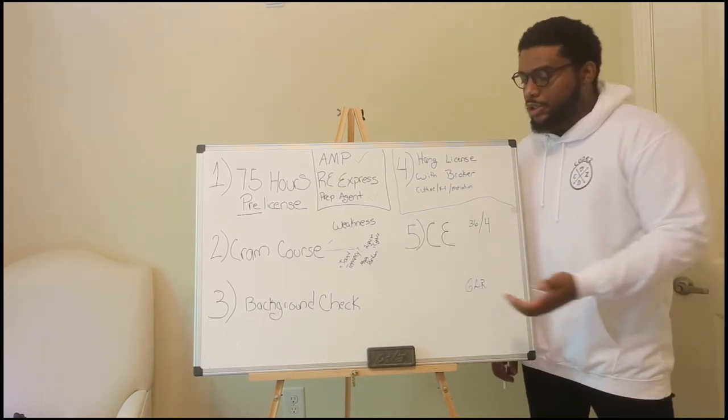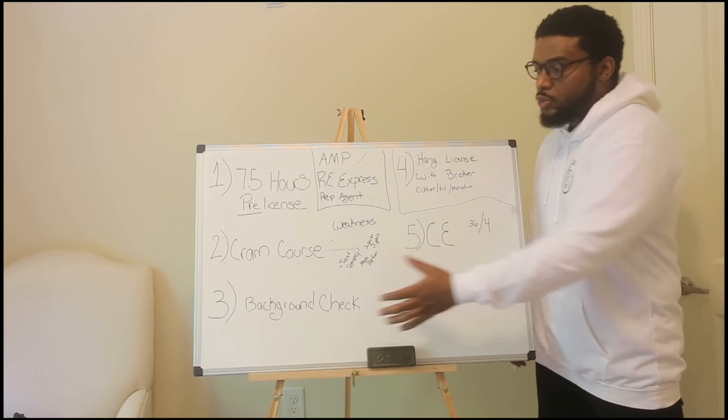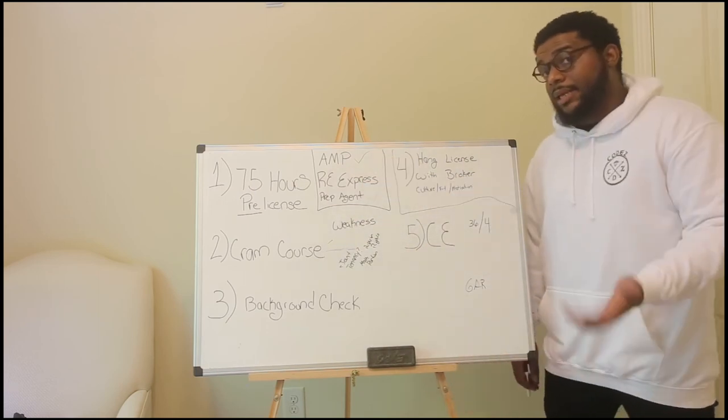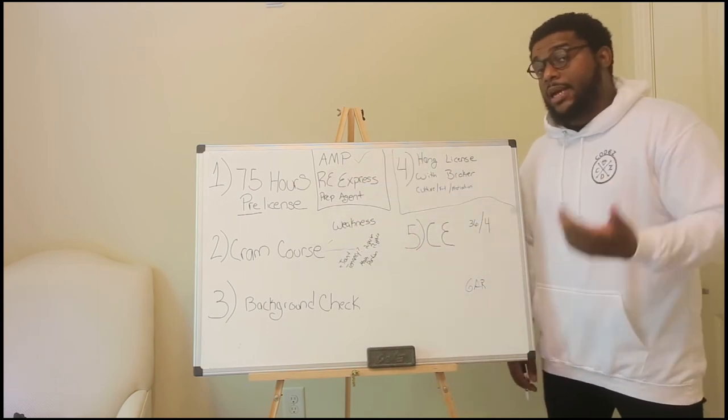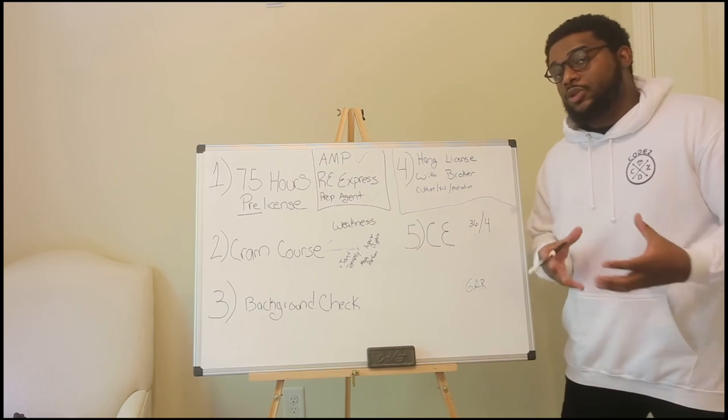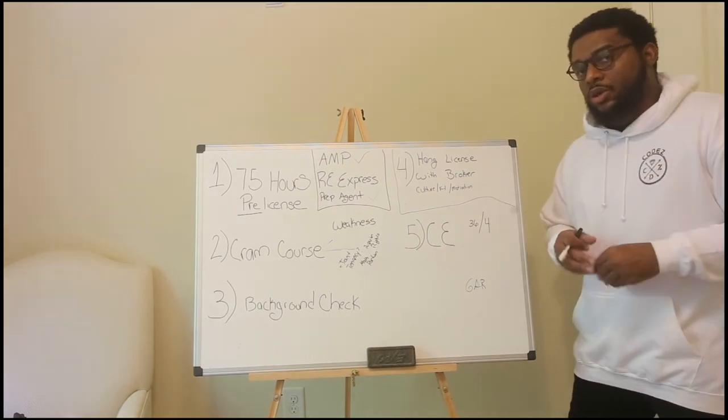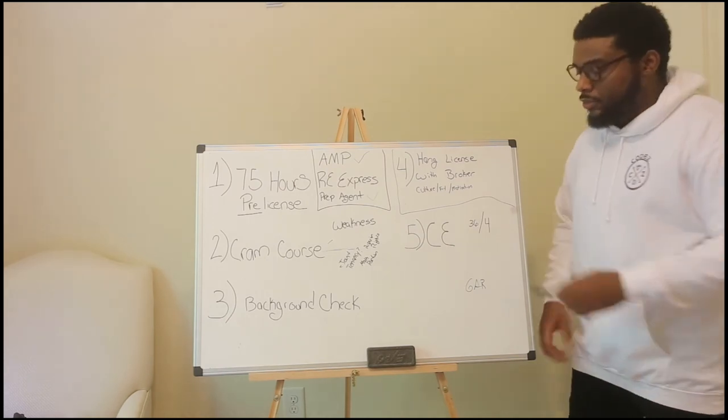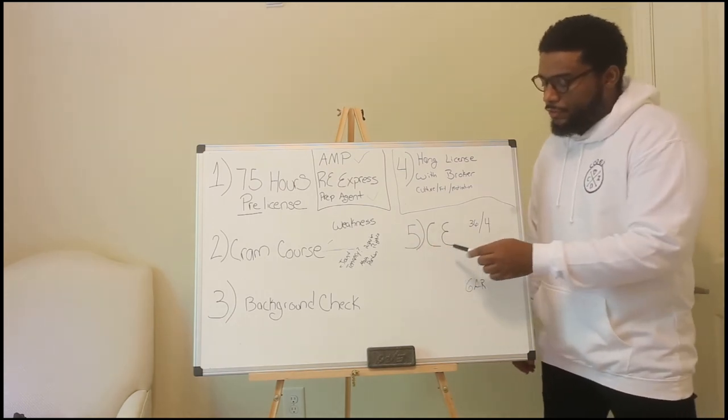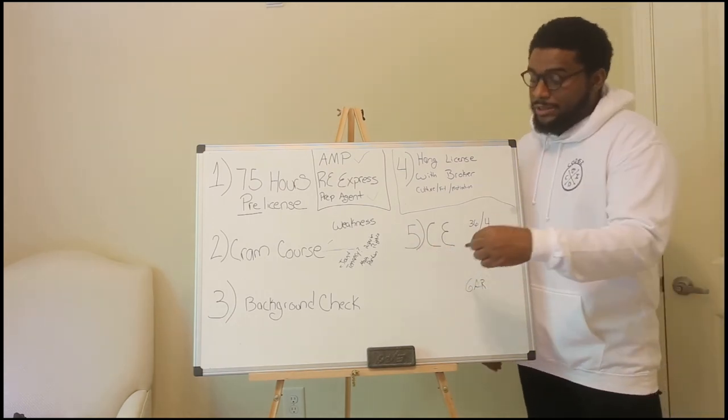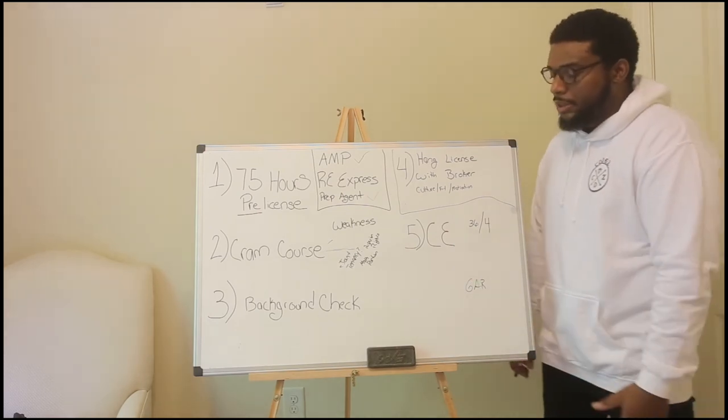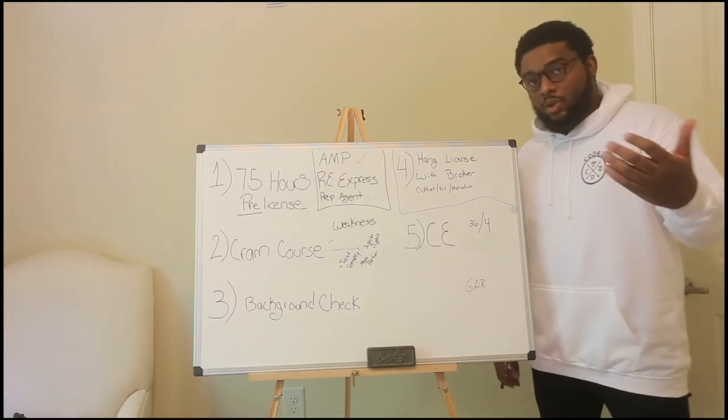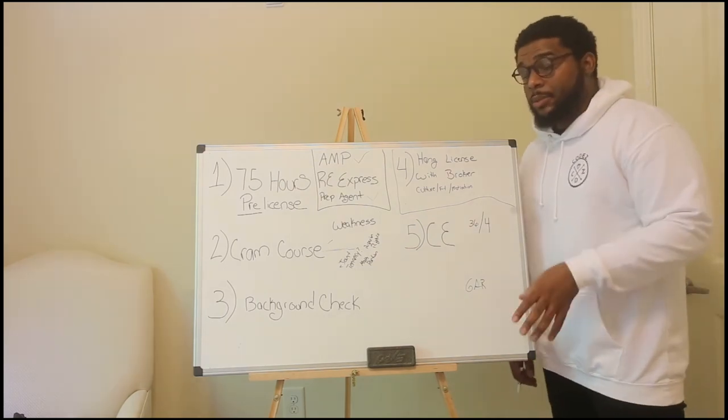Lastly, there's something called CE, which is continuing education. Once you've done all of this, you got your license in hand, you have to complete 36 hours in order to let the commission know that you are staying on top of your game. You're staying on top of the ever-changing laws that are going on in your state. Always make sure to stay on top of your continuing education because if you don't, you're going to have to pay fees and then ultimately they can deactivate your license.